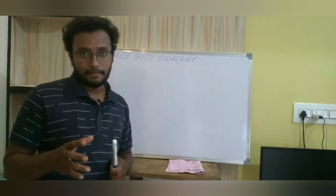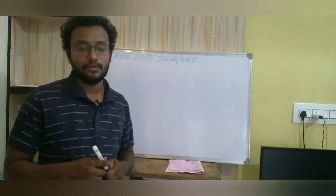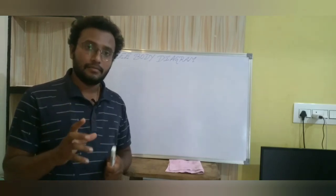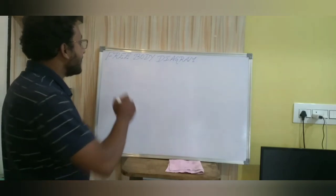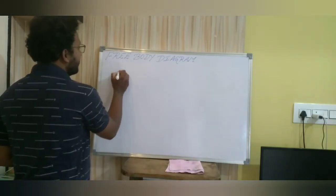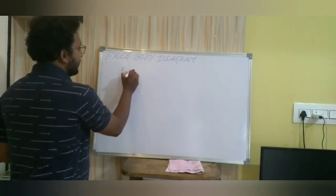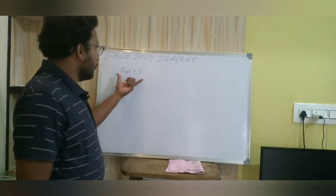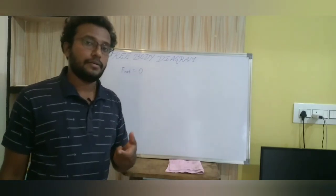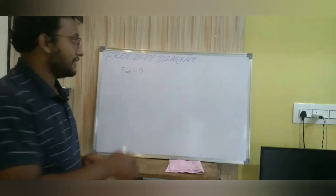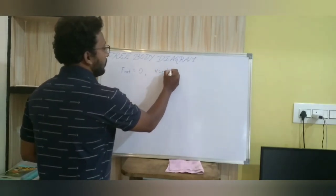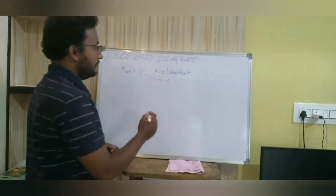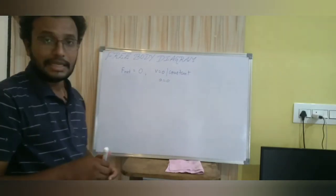Generally, when we are studying mechanical systems, we will come across two cases. One is the mechanical system will be in equilibrium. Equilibrium means the net external force on the mechanical system is equal to zero. When the net external force is zero, the velocity of that system is going to be either zero or constant, which means the acceleration of the system is going to be zero. This is called mechanical equilibrium.